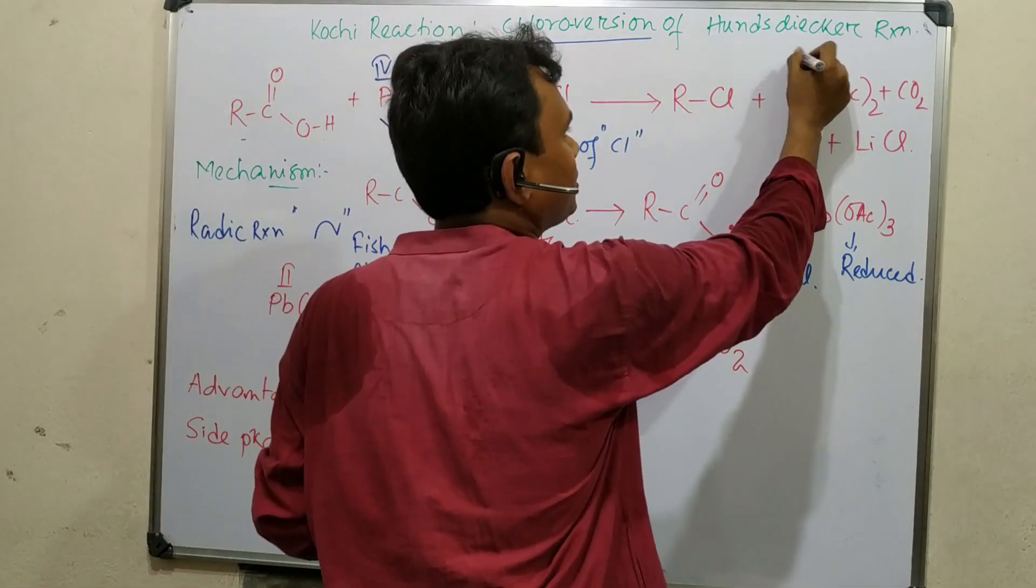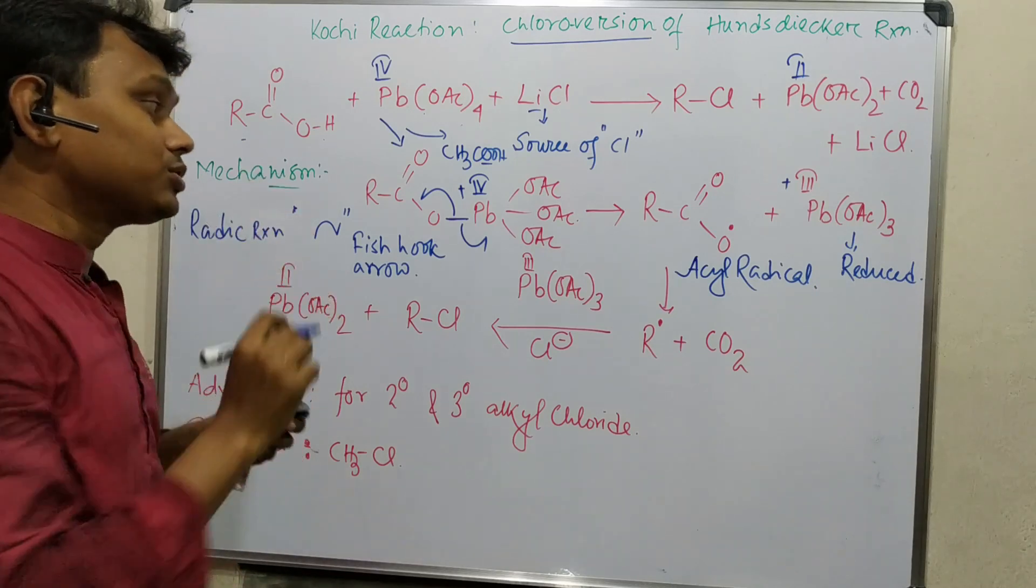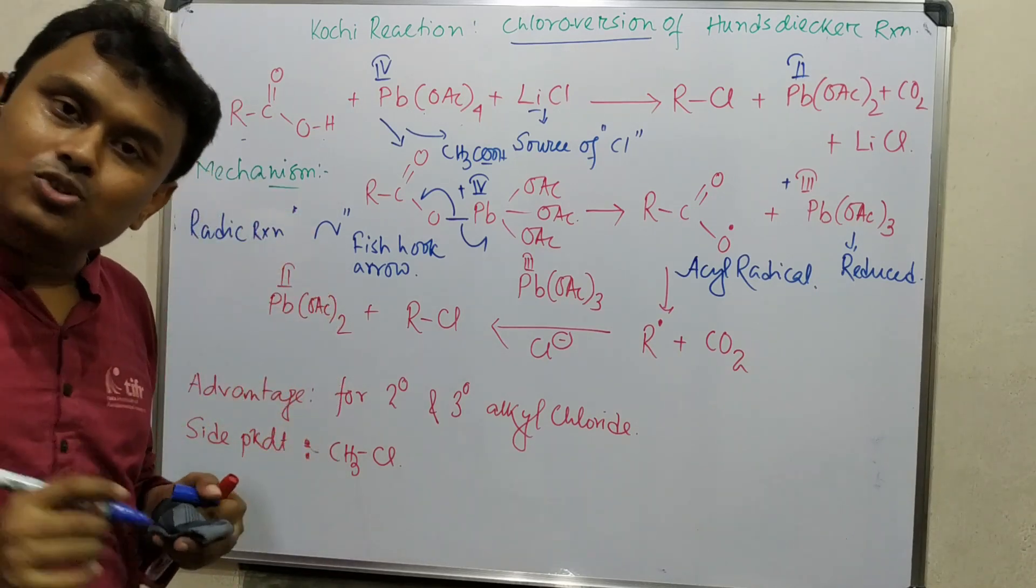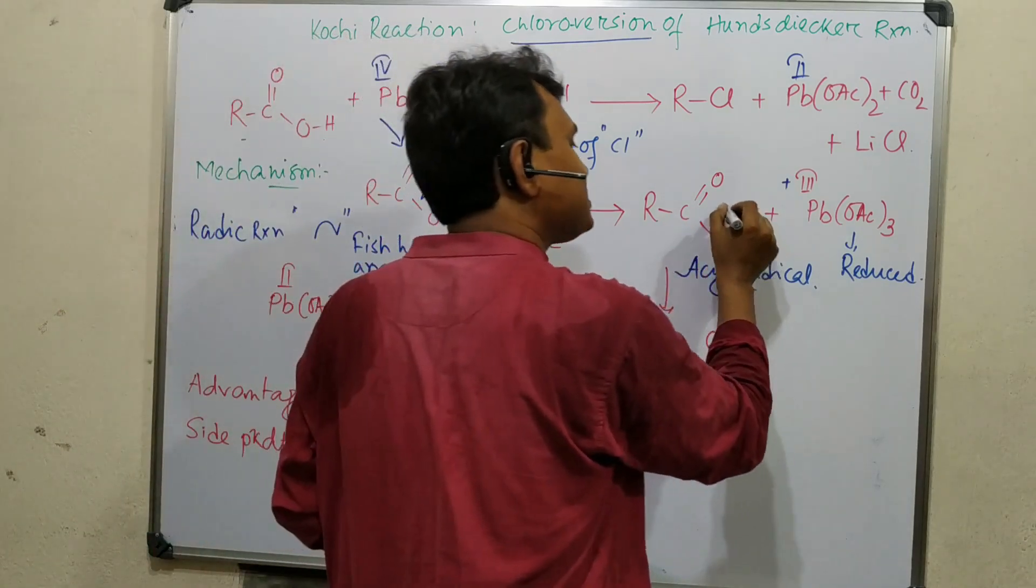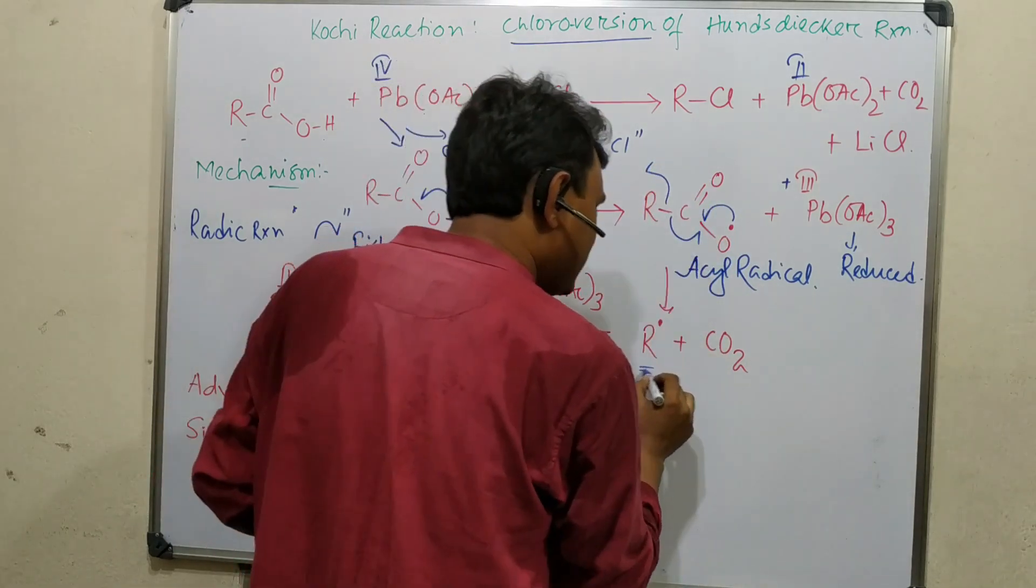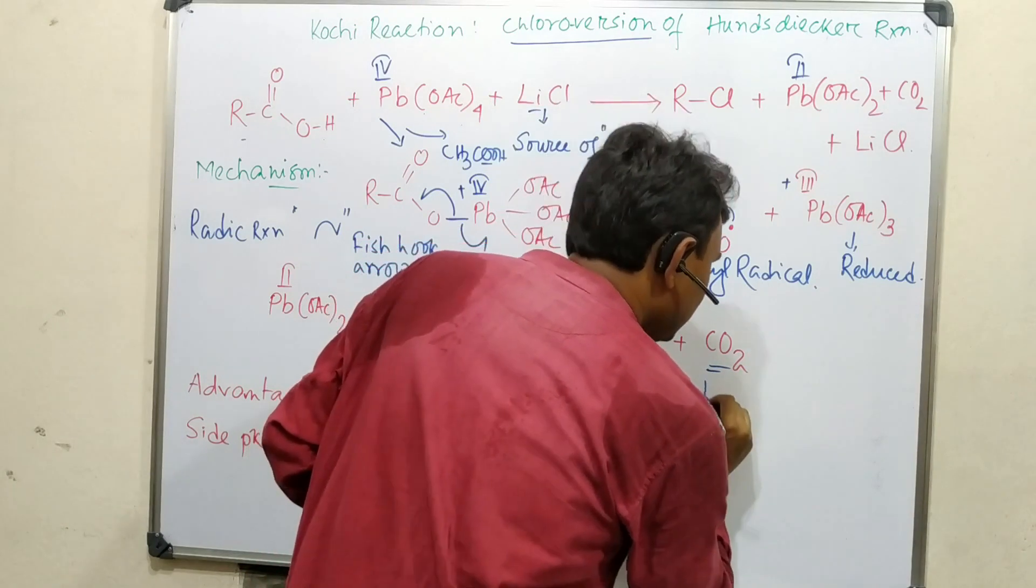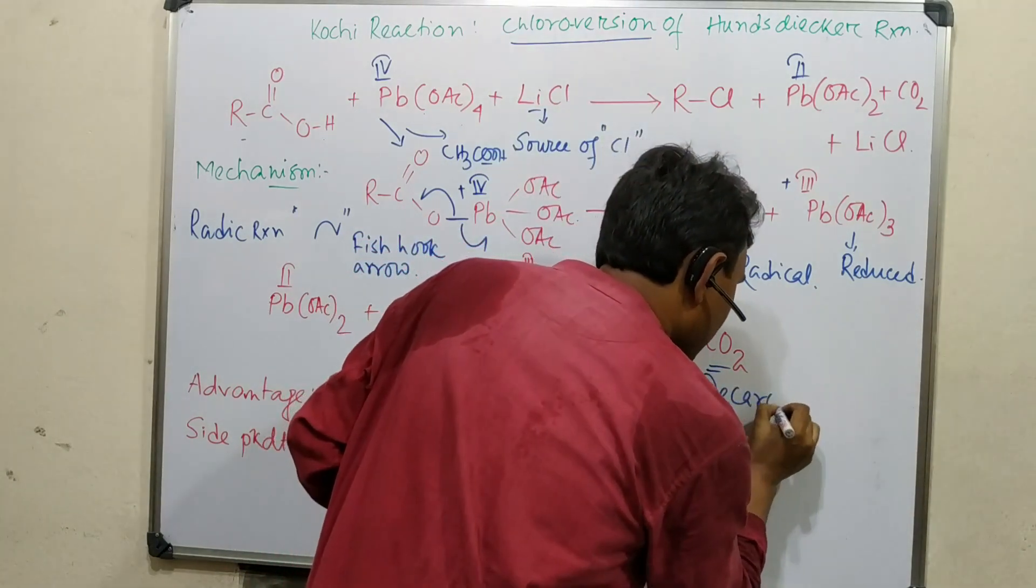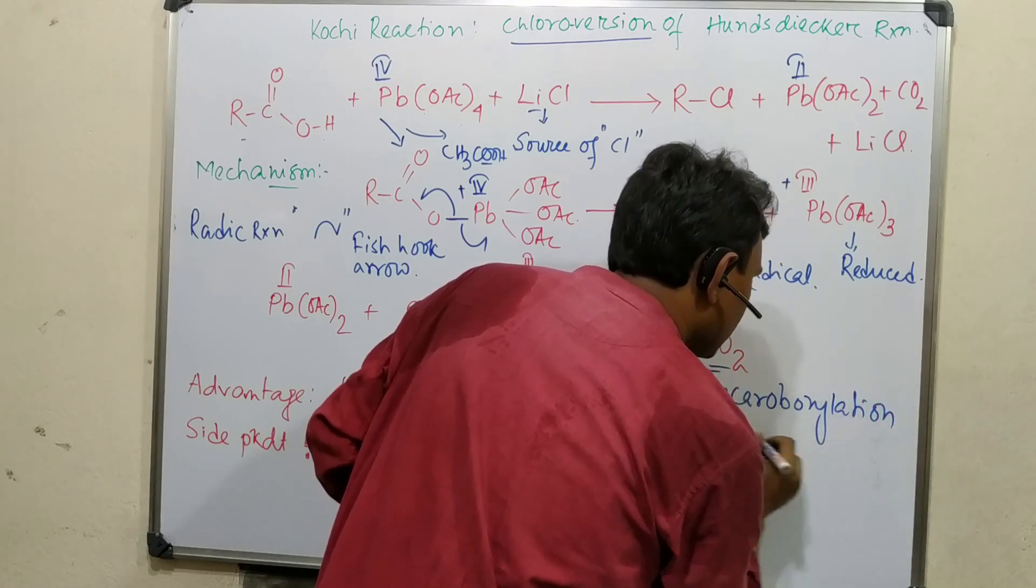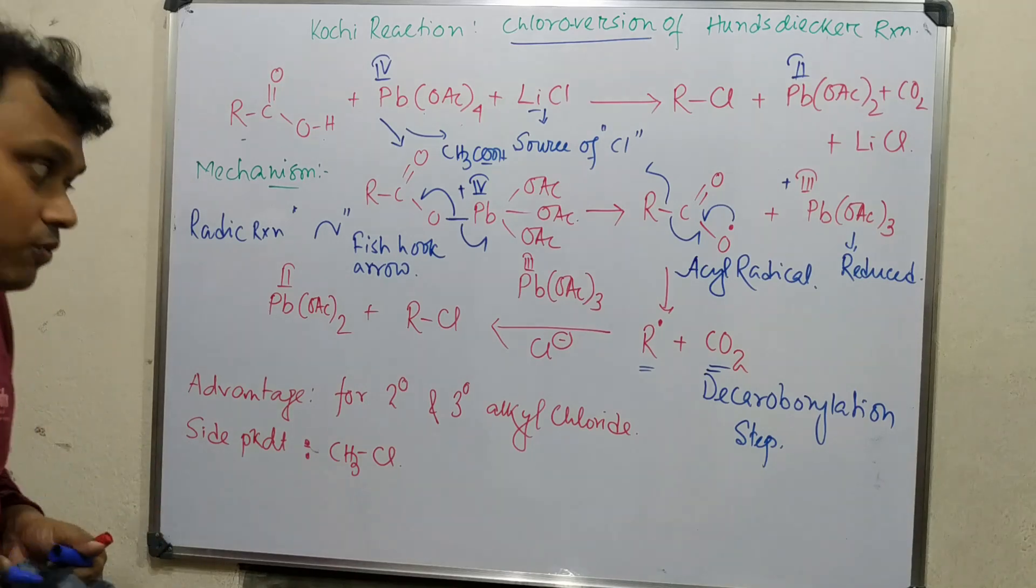Here we have lead-2, but still one more reduction step is needed. This is also a decarboxylative chlorination. That's why decarboxylation will happen, and actually that occurs at this stage. One electron moves here, and in this way the alkyl radical is produced along with CO2. This is the decarboxylation step.